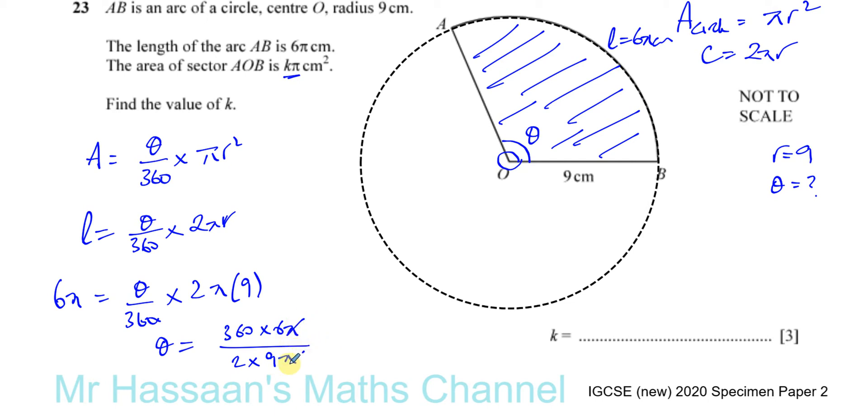The π cancels out. Nine goes into 360 forty times, two goes into 40 twenty times. You're left with 20 times 6, which equals 120. So θ equals 120 degrees.